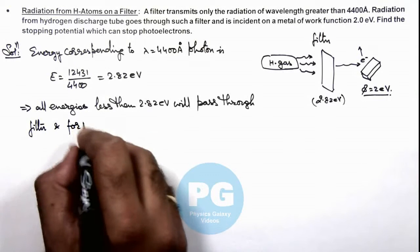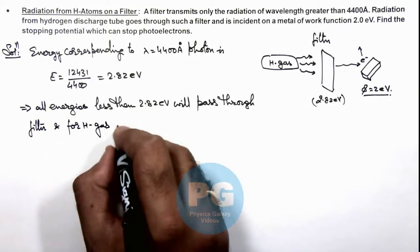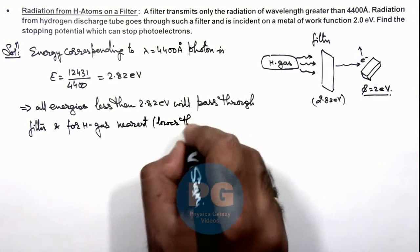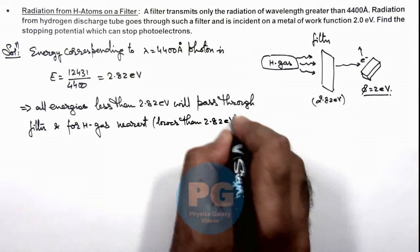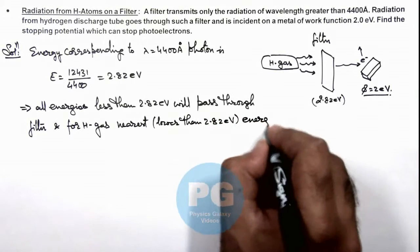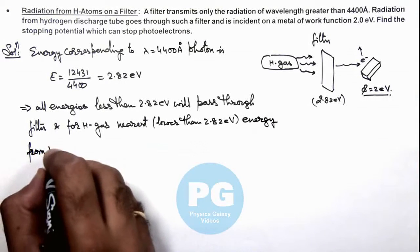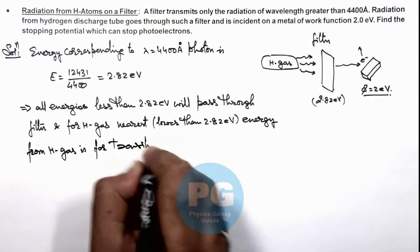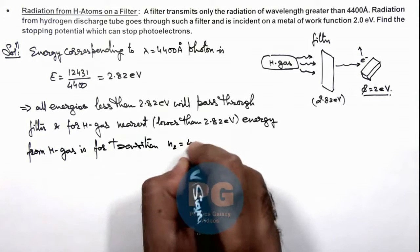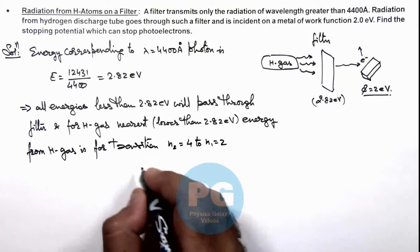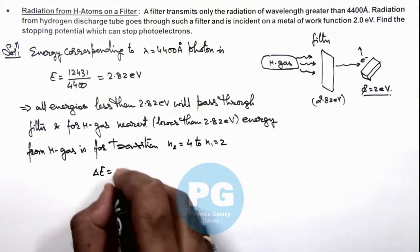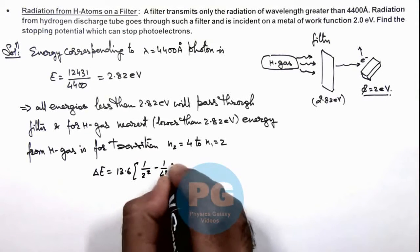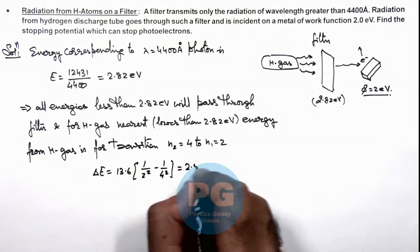For hydrogen gas, the nearest energy lower than 2.82 eV from hydrogen gas is for the transition n₂ = 4 to n₁ = 2. We can write this energy is equal to 13.6 multiplied by (1/2² - 1/4²), that is equal to 2.55 electron volts.